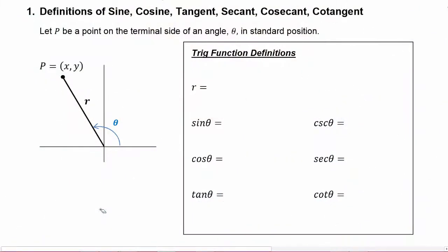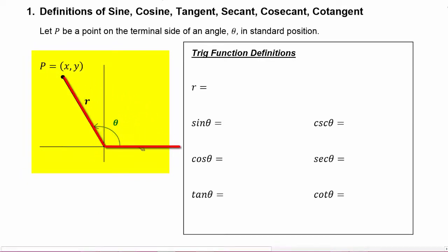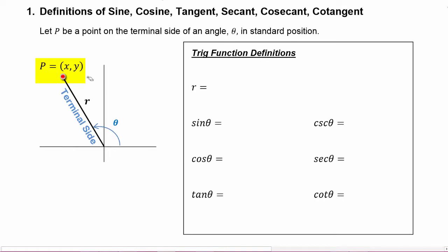To understand these definitions, let's take a look at an angle theta here in standard position. The terminal side of theta goes through this point, which has an x-coordinate of x and a y-coordinate of y.